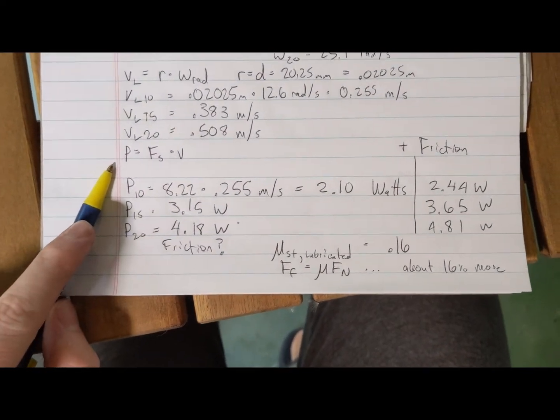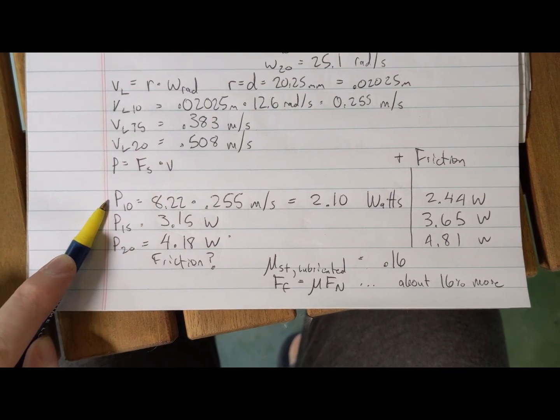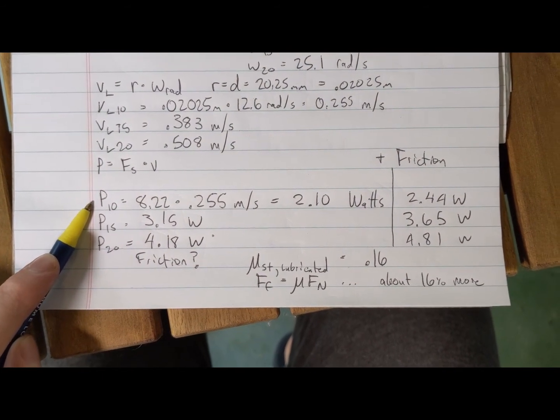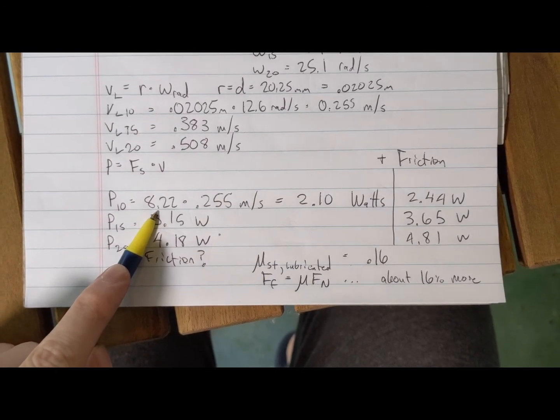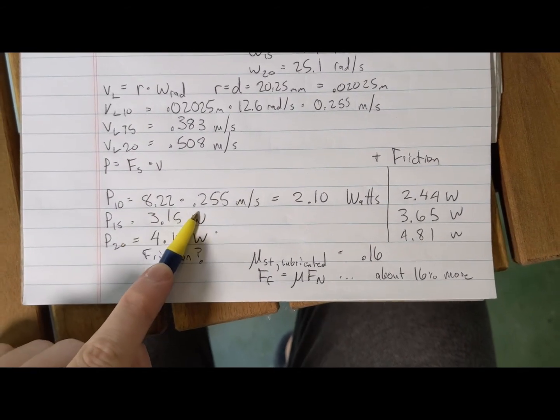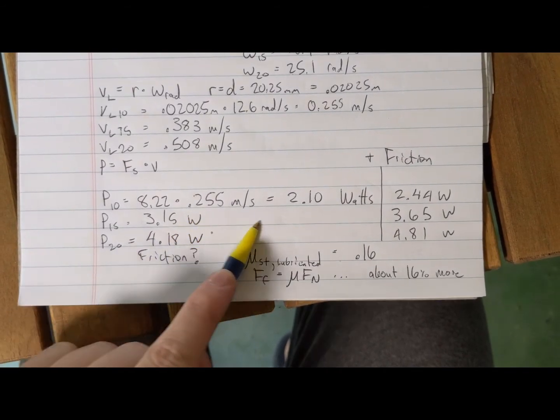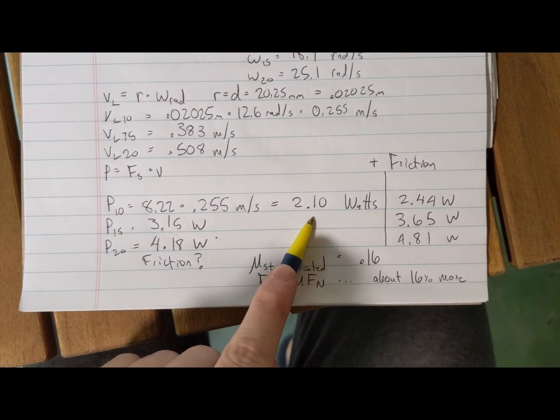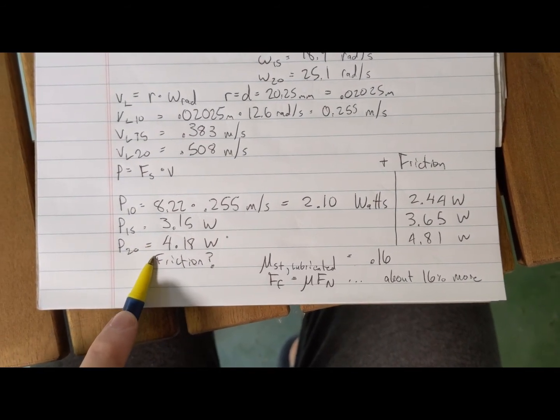Now bringing back the power figure, we're going to look at the power loss at 10 miles an hour. That's our force of 8.22 newtons times our linear velocity at the drive ring of 0.255 meters per second. That equals 2.1 watts, calculated again for 15 and 20.